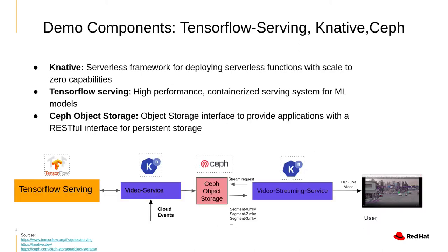The next main components were the analytics with TensorFlow serving, the main service architecture with Knative, and our persistent storage architecture with Ceph. Essentially, the first video service allows us to take in video from our Kafka messaging component and run real-time analytics with a TensorFlow serving deployment. Then we have persistent storage done with Ceph object storage, acting as the back-end for an HLS server completed by our video streaming service. The best part is that the video service and video streaming service can scale up and down automatically because they are serverless functions.